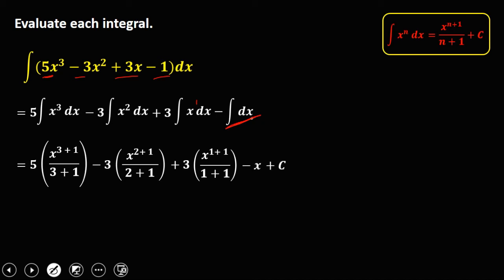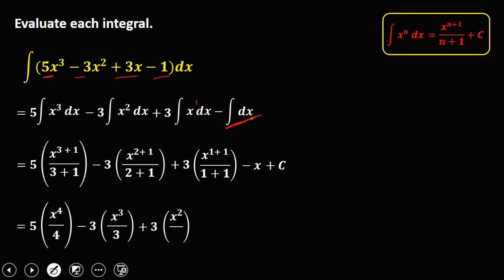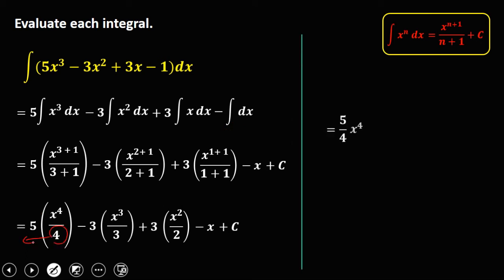Simplifying: 5 times x to the power 4 over 4 gives 5 over 4 times x to the power 4. The 3 over 3 cancels, giving negative x to the power 3. Then plus 3 over 2 times x to the power 2, minus x, plus C.